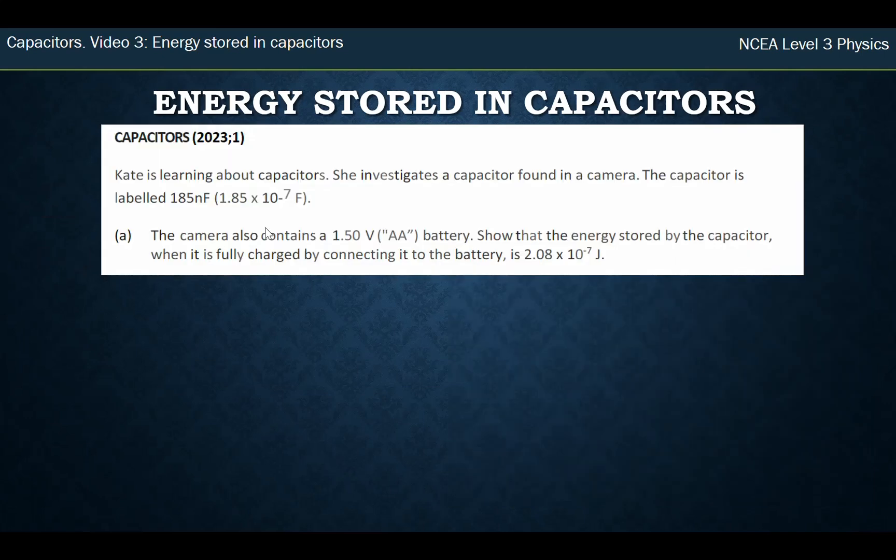So what does this look like? This is a question from the 2023 paper. Kate's learning about capacitors. The capacitor is labelled as 185 nanofarads. You can see in the last video we talked about capacitance being a small amount. So it's 1.85 × 10⁻⁷ farads.